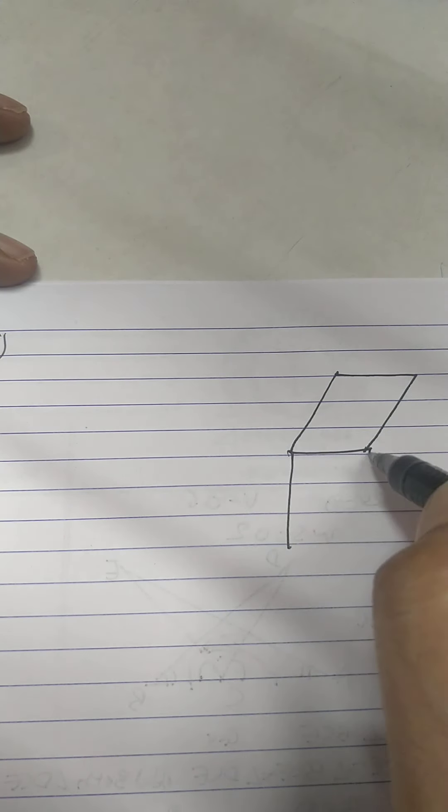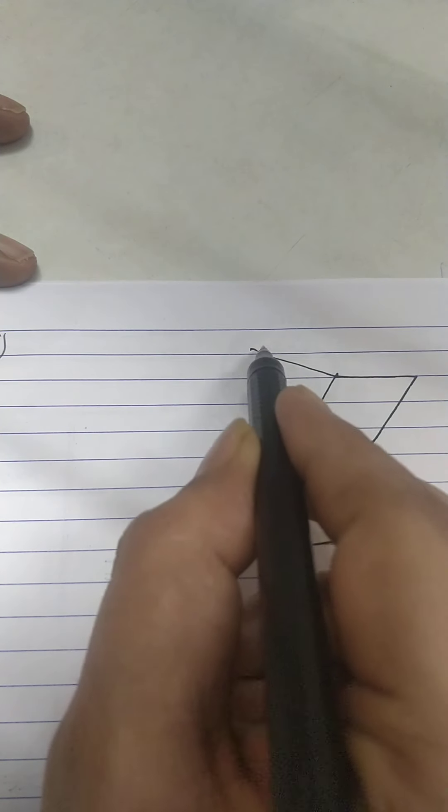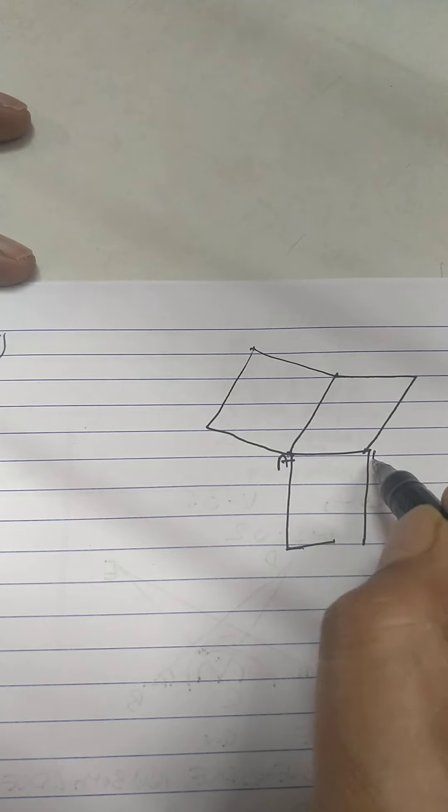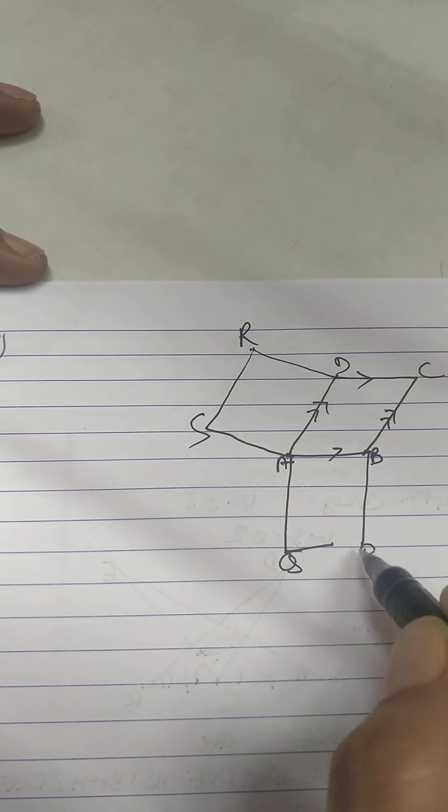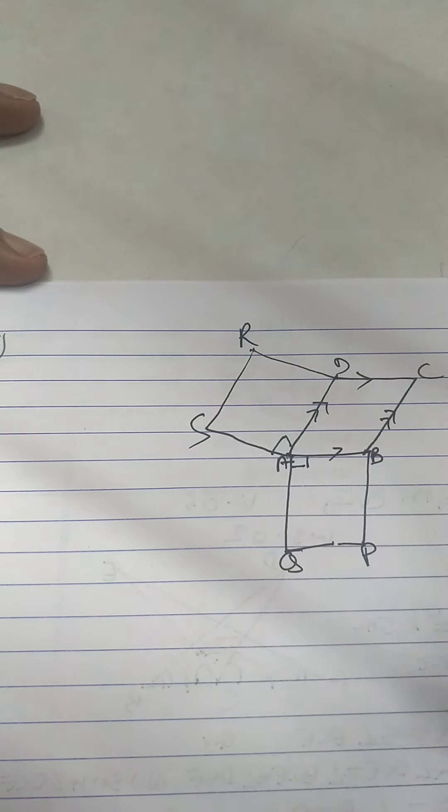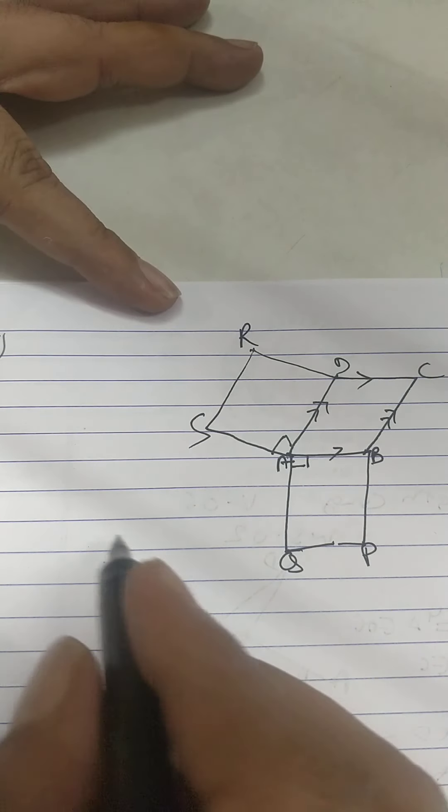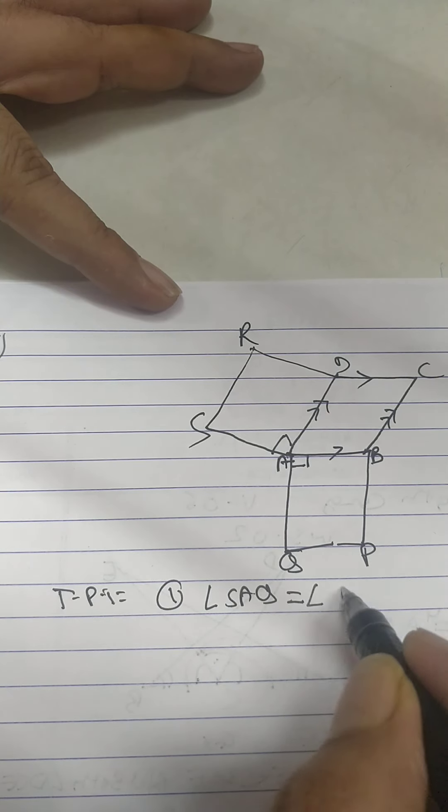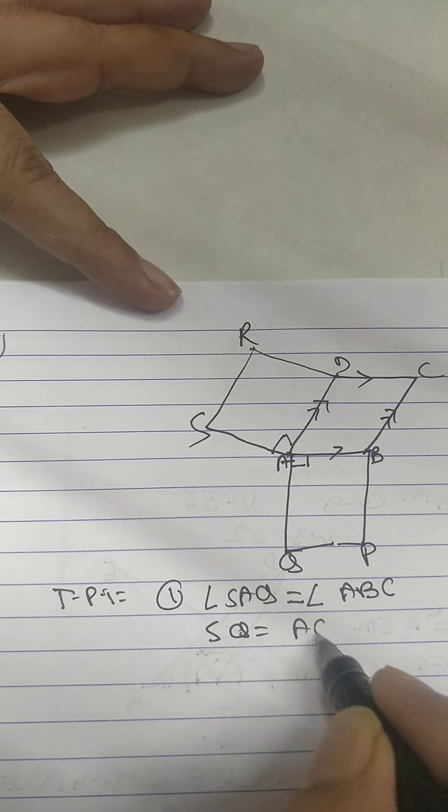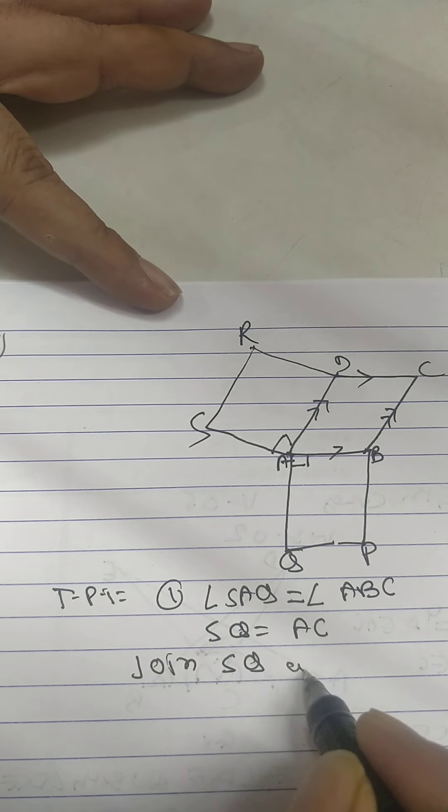Sum number six: it's a parallelogram, this is square, this is square. ABCD, this is 90, this is 90. What I have to prove: angle SAQ equal ABC and then SQ equal AC. Join SQ and AC.